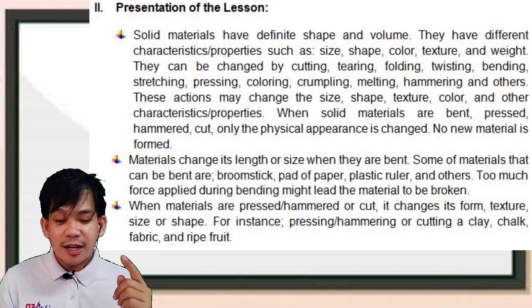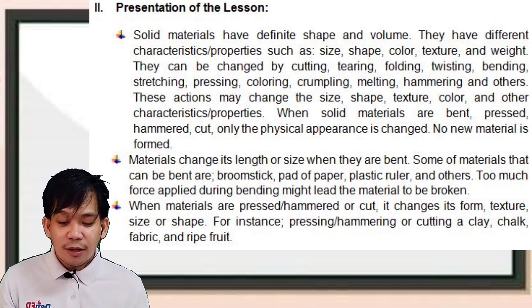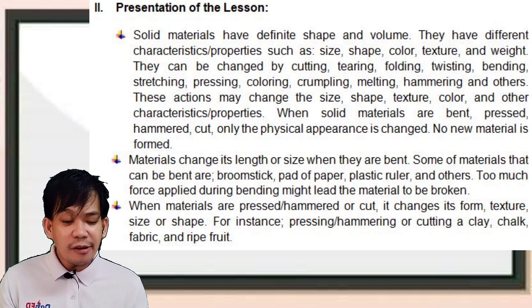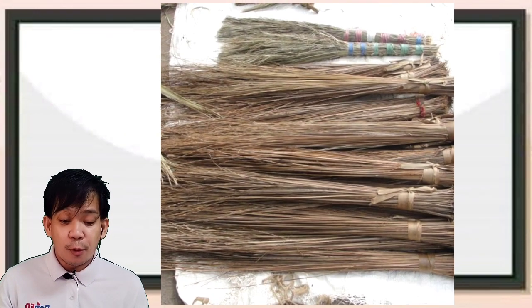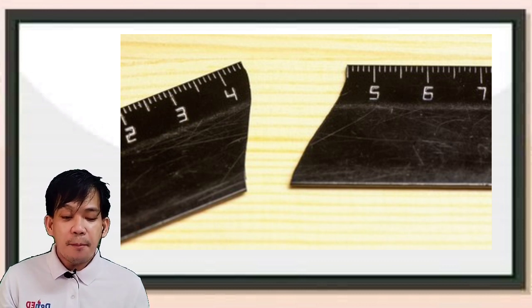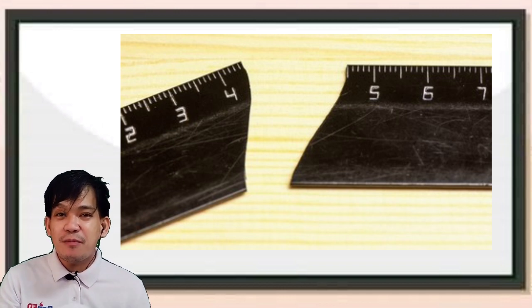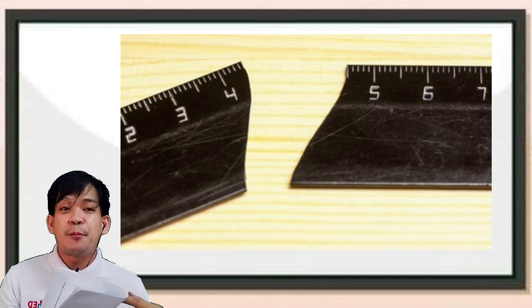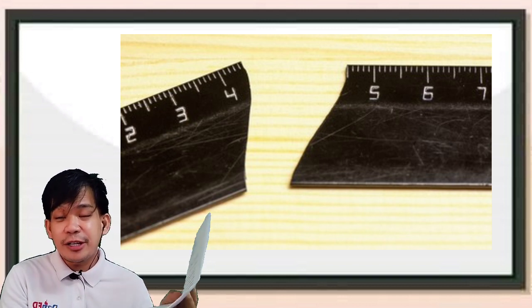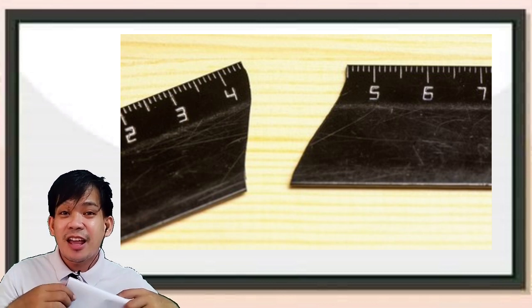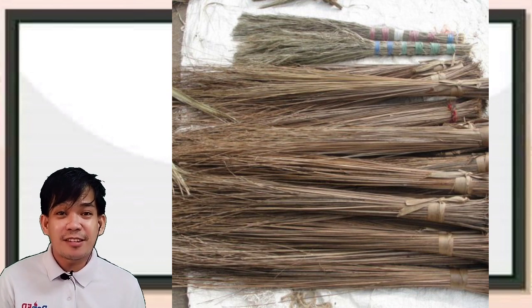When you bent, pressed, hammered, and cut the materials — what are the materials that can be changed when you bent them? Here are the materials that can be bent: broomstick, yung walis, pad of paper, plastic ruler, and other materials. Too much force applied during bending might lead the material to be broken. Kapag masyado malakas yung ating pagkakabend sa materials, it might result in the breaking of the materials. For example, yung plastic ruler — yes, it can be bent, but if you fold it hard, it can be broken. Yung broomstick, if you bend it, it will easily break.